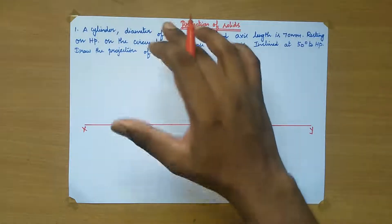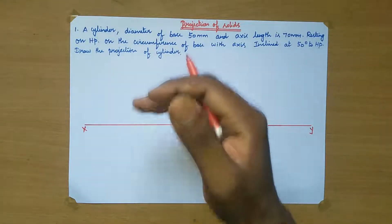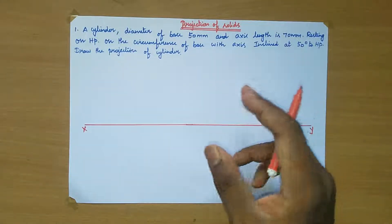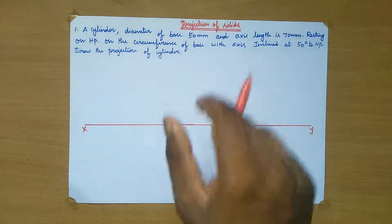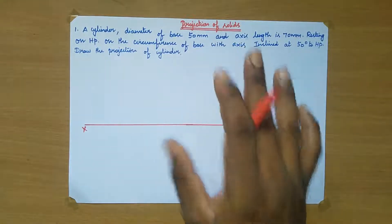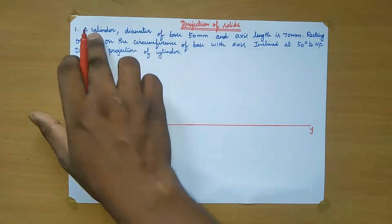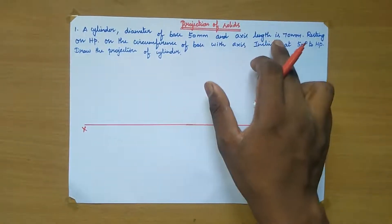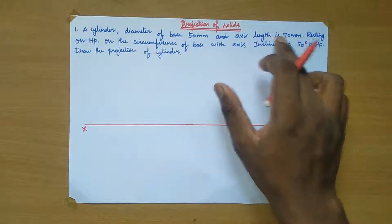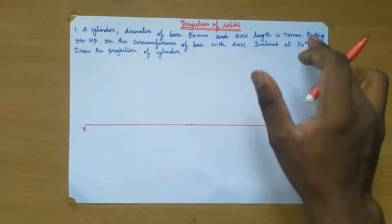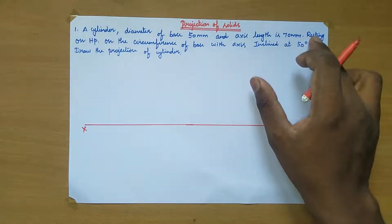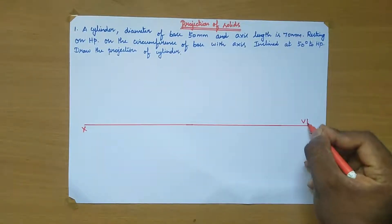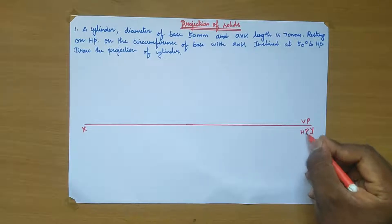The cylinder on the front view section and the top view section — the cylinder diameter of base 50 mm and axis 70 mm is resting on HP. The axis is on the front view section, where the fixed plane is HP. This one is VP, this one is HP.